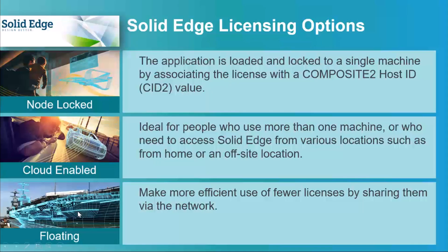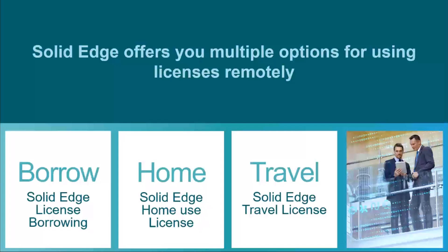A floating license is your most common license type — it's a server at work that serves licenses out to machines connected to its network. If you're connected to the network at work or VPN'd in from home, you'll have no problem. If your internet isn't fast or you're unable to VPN, then you'll want to consider the three options.